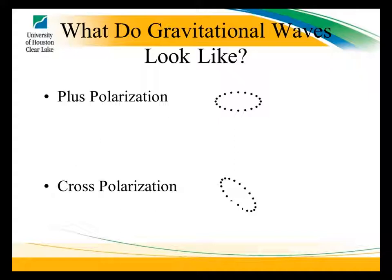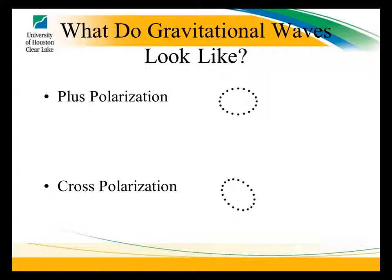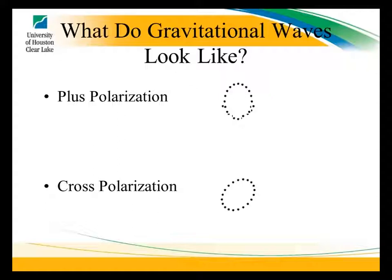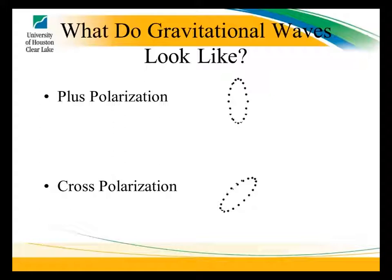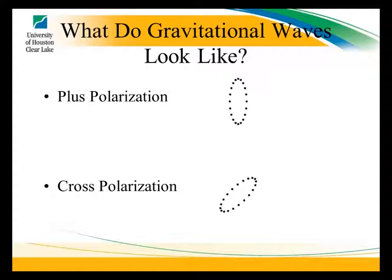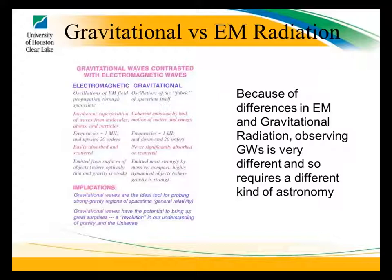Gravitational waves are ripples in the fabric of space-time itself. You can imagine a gravitational wave going into a screen, with a ring of particles. As the wave passes by, it causes the ring to deform into an oval and back to a ring, then into an oval in the other direction. There are two polarizations: a 'plus' polarization and a 'cross' polarization. You can combine these to get a rotational polarization. This means that when a gravitational wave passes by, you actually get a little bit taller and thinner, then shorter and fatter.